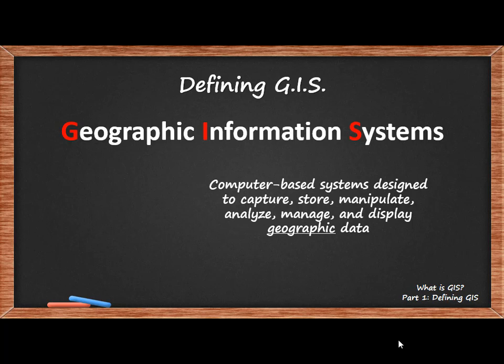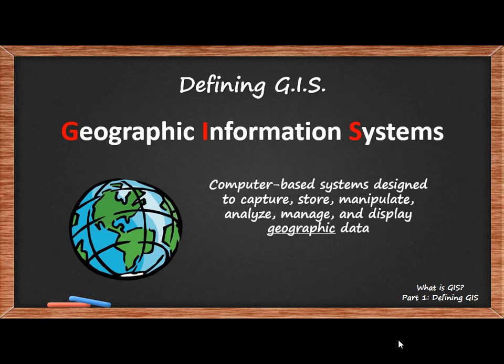As their name suggests, GIS are information systems, or networks of hardware and software, that are used by people and organizations all over the world to collect, create, process, and distribute data. What sets Geographic Information Systems apart from other types of information systems is the term geography. GIS specifically handle data that are geographic, meaning the data are referenced to locations on Earth. The term geography literally means describing the Earth, and we often use the term spatial alongside geography or geographic to describe these datasets since they occur across space.